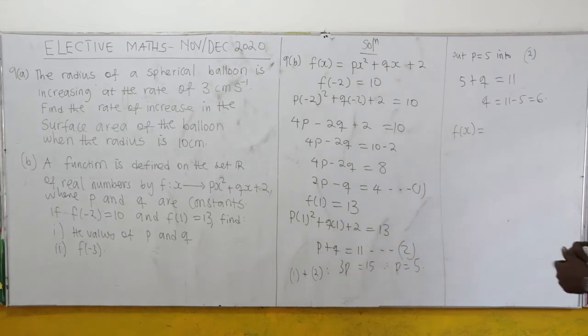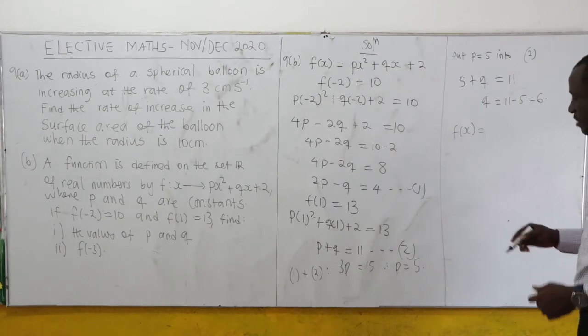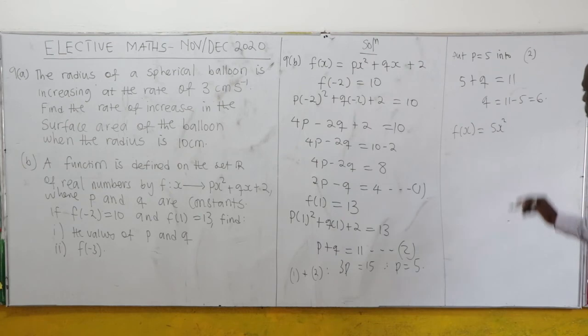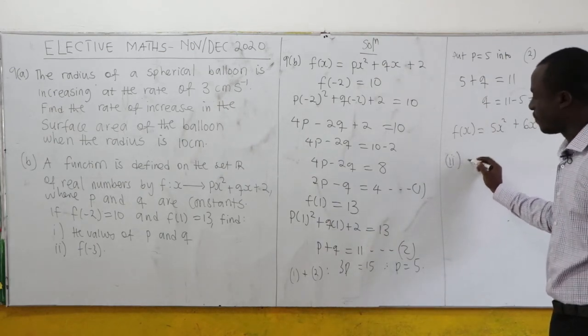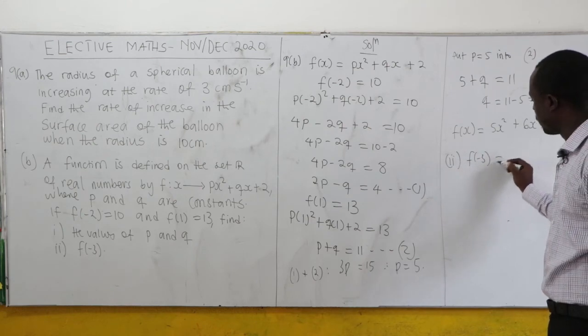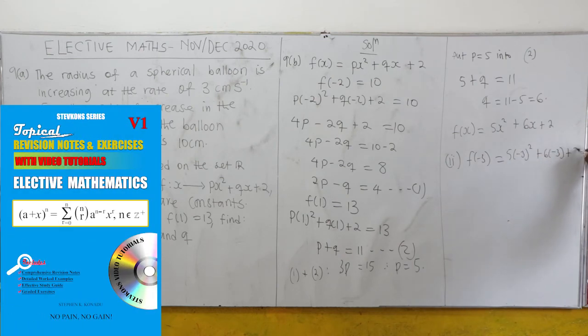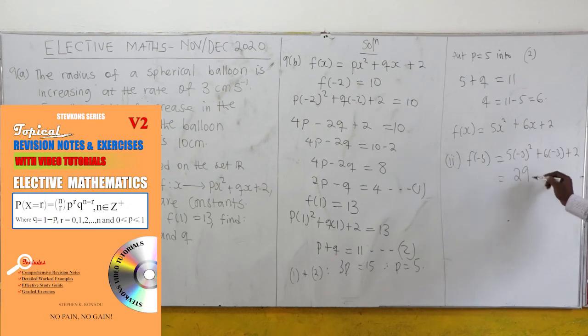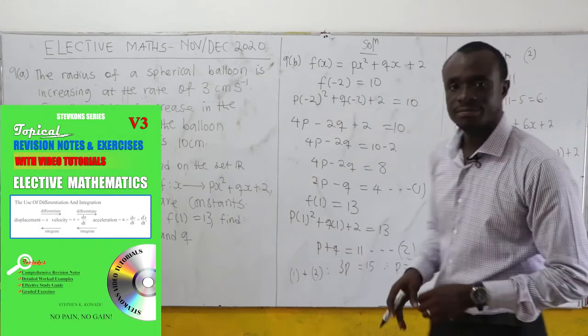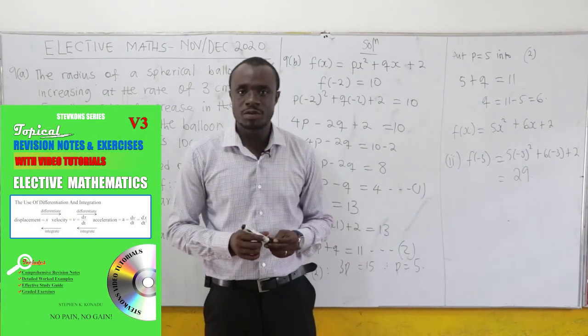Part ii asks us to find f(-3). So f(-3) = 5(-3)² + 6(-3) + 2, which equals 29. Very straightforward.